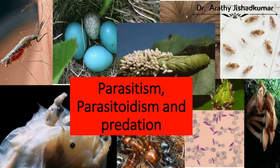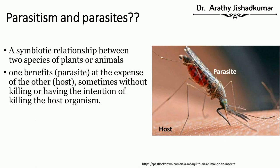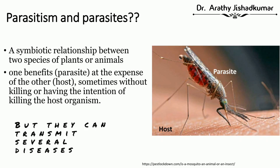Parasitism is a symbiotic relationship between two species of plants or animals. In parasitism, there are two partners — one is a parasite, another is a host. Parasites usually feed on the host or depend on the host for food and shelter. Parasites usually don't have the intention of killing the host.